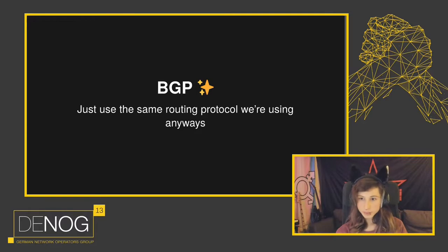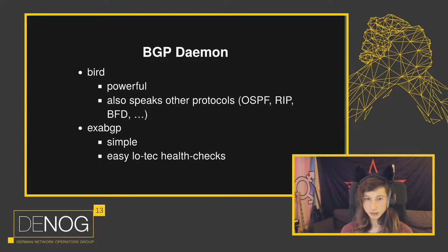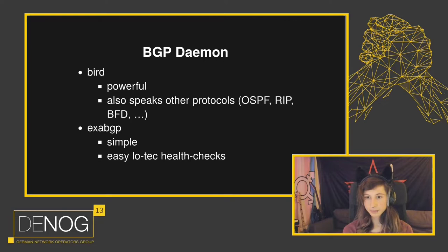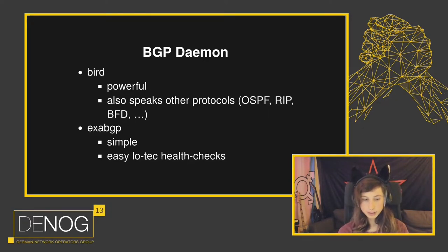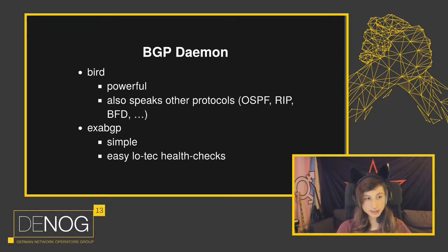So how do we talk BGP to a server? We need to install a routing daemon. In this talk, I'm showing you BIRD and XRBGP, which are both quite simple BGP daemons. There are also others like FRR or Quagga, which also work perfectly fine. BIRD also speaks other routing protocols and has extensive options for filtering. XRBGP is quite simple and you can relatively easily implement low-tech health checks, which we will talk about later.